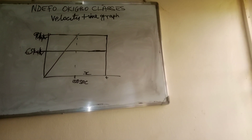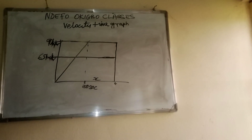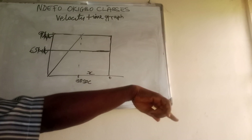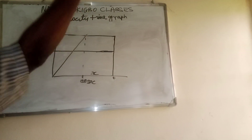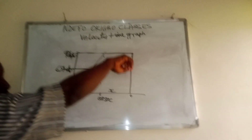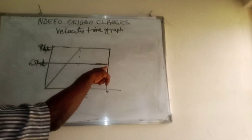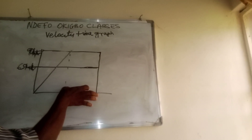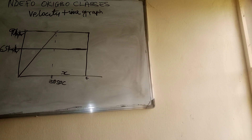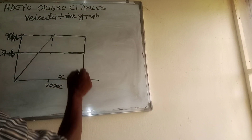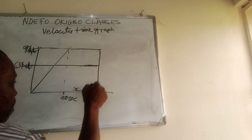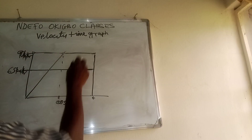To find the distance, we need to get the value of X — the time from when the second car reached 90 km/h to when it overtook the first car. The distance traveled by the second car is the area of this trapezium. But before we can get that area, we have to get X.